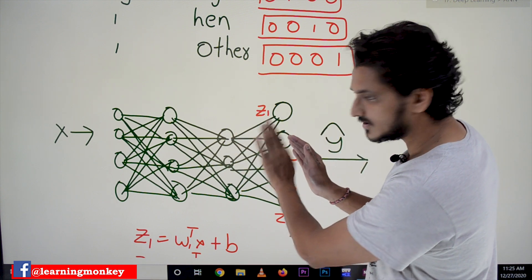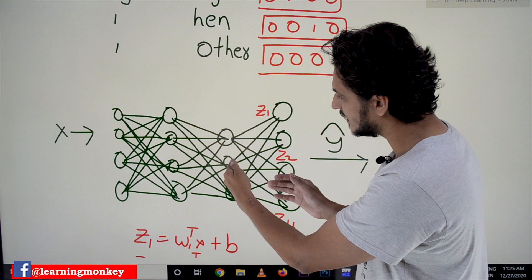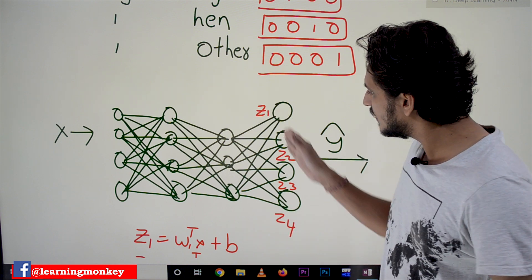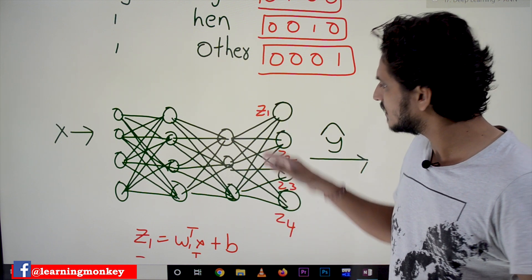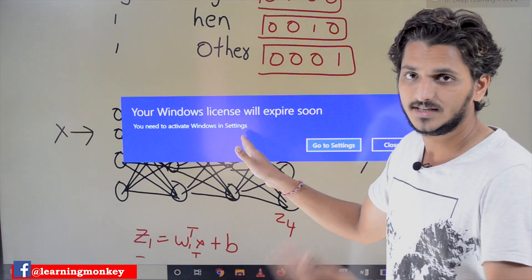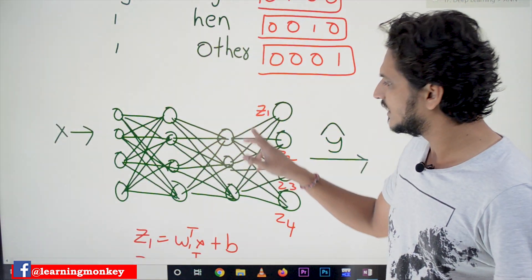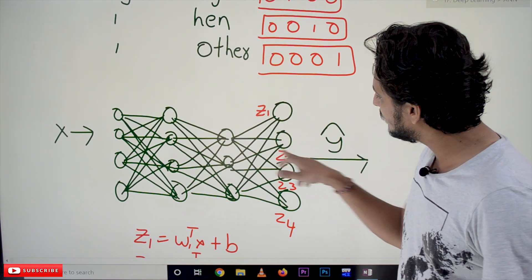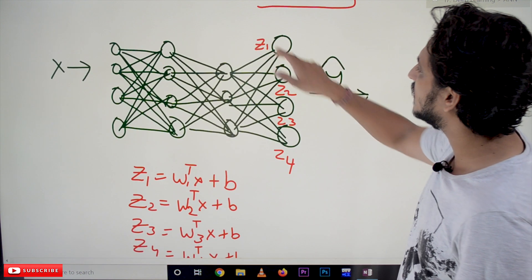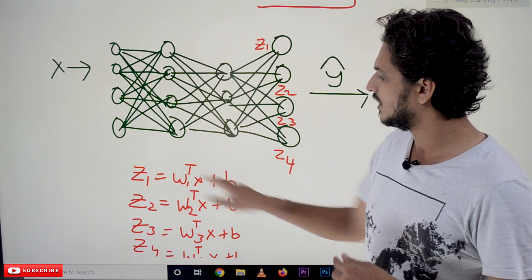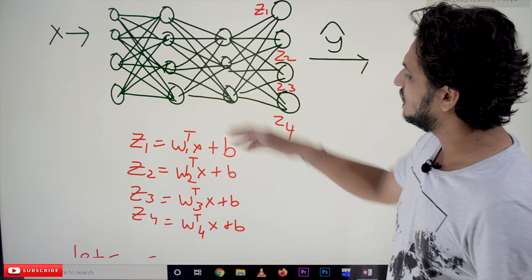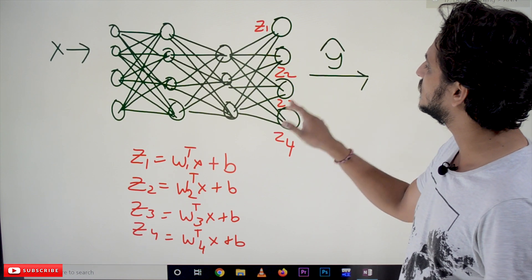The outputs from the hidden layer serve as inputs to the output layer. We calculate Z1, Z2, Z3, and Z4 using weight equations: W1_transpose × X + B = Z1, W2_transpose × X + B = Z2, and so on for Z3 and Z4. These are the equations used in our previous classes to calculate the Z values for each output neuron.